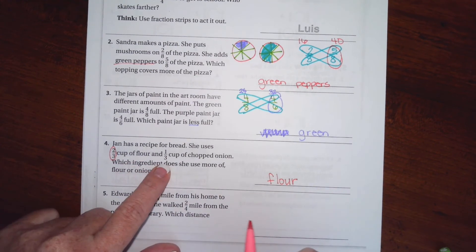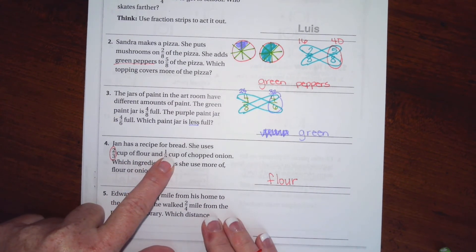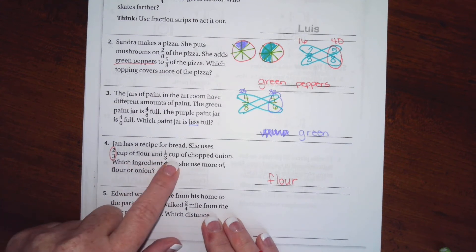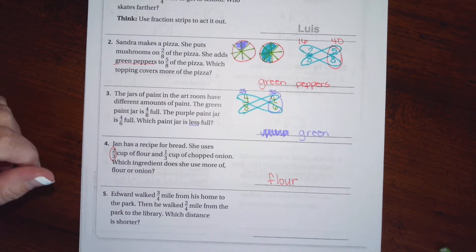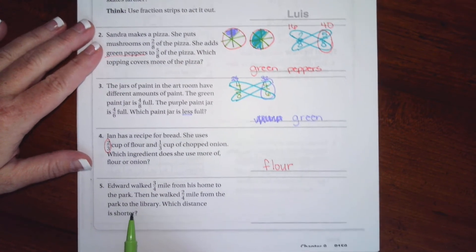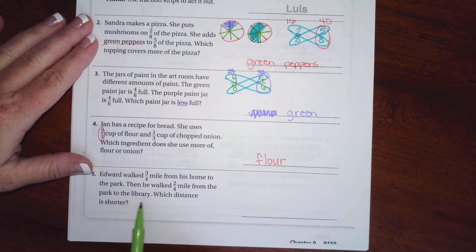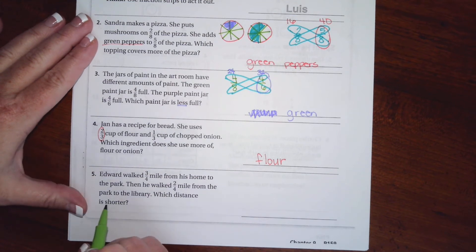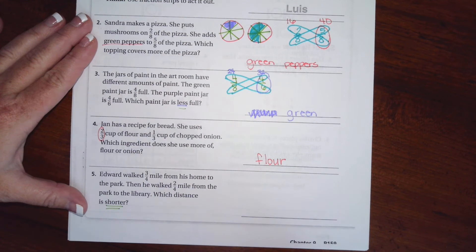So when they have the same denominator, the bigger numerator wins. If they have different denominators, then we're going to do our butterflies. All right. You guys are going to go ahead and do number 5. It says Everly walked 3/4 of a mile from a time to the park, then you walk 2/4 of a mile from the park to the library. Which distance is shorter? Just like Miss Leah did up here, read all the way through. Okay, shorter, so it's a smaller number.